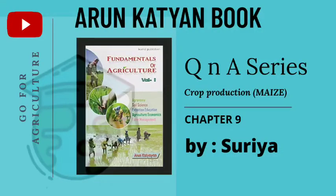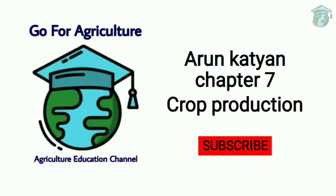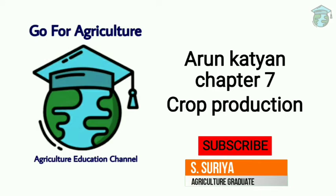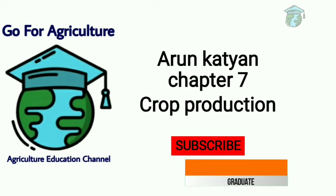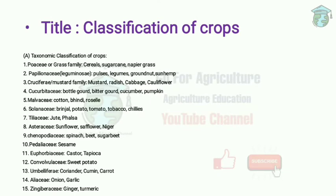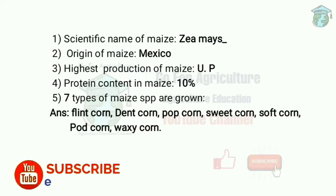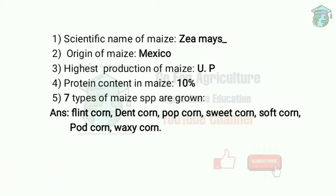Hi guys, this is Go for Agriculture channel. Today we are going to discuss Arun Githyan chapter 7C, crop production. We have already discussed the classification of crops as well as rice and wheat. Today we will discuss maize, sorghum, and pearl millet.